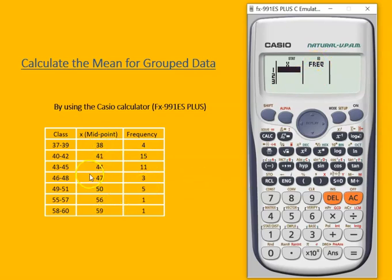We add all the values to the calculator for the X and frequency column. So 38, 41, 44, 47, 50, 56, and 59. You would have noticed on the right side the calculator is taking some values on its own - 1, 1, 1, 1. We need to adjust them.